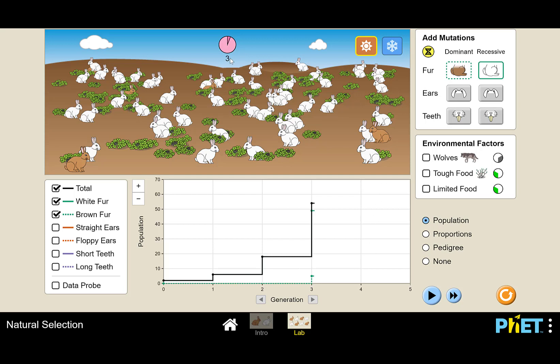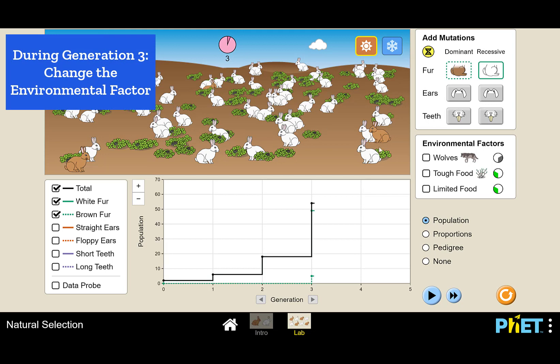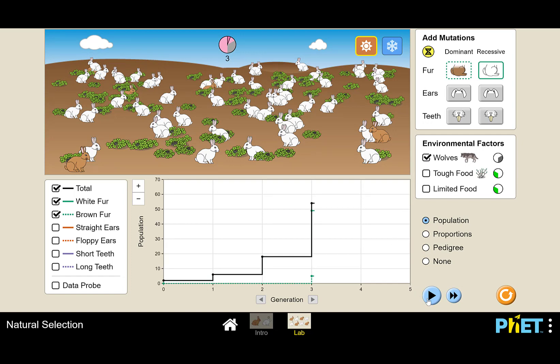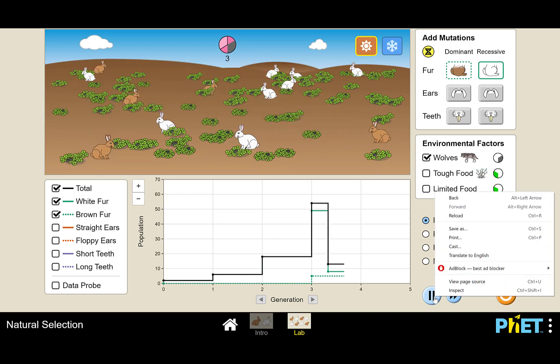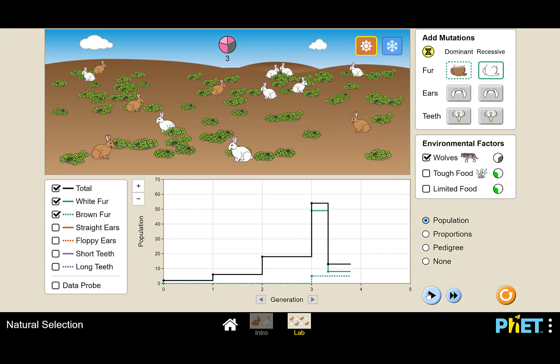All right. During the third generation, we are going to make a change in the environment. I'm testing a change in the environment where wolves move in. So you can probably already guess what's going to happen. So prepare yourself. I'm going to click on wolves and then I'm going to hit play. Oh goodness. Oh goodness. Okay. Oops. I'm going to hit pause again.